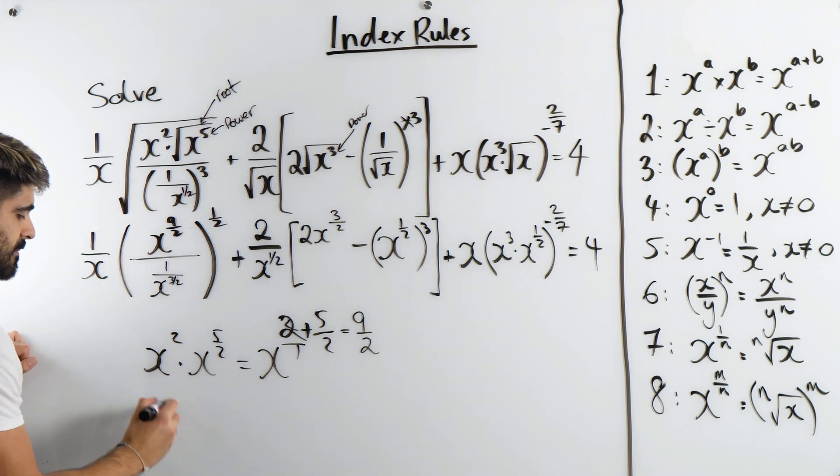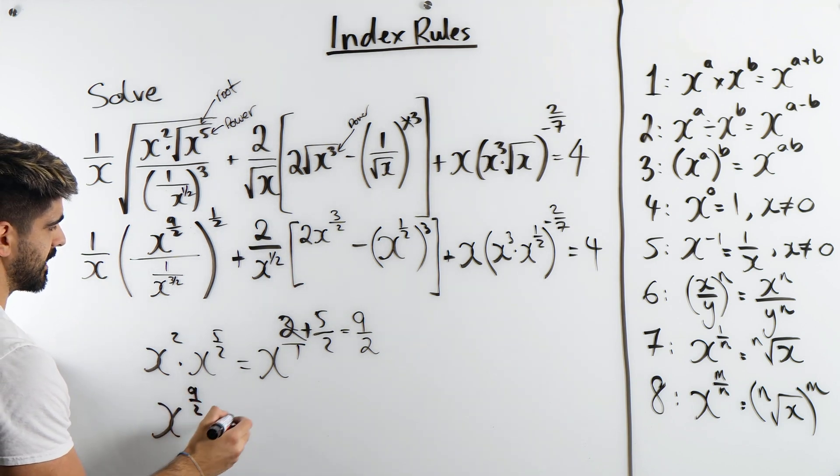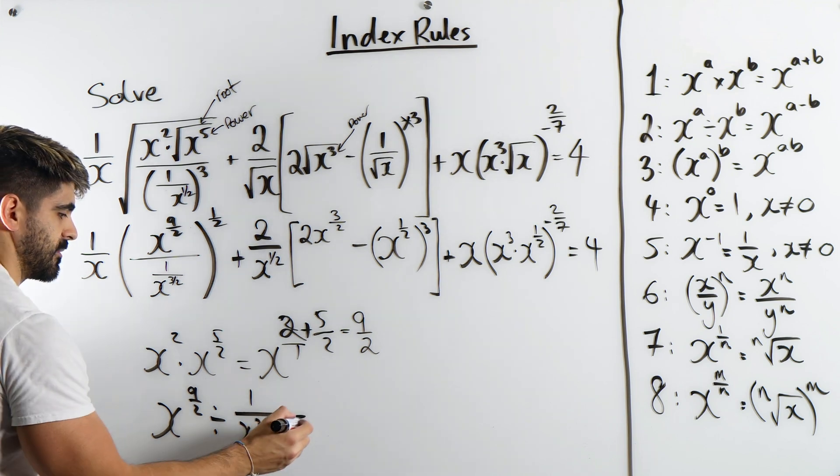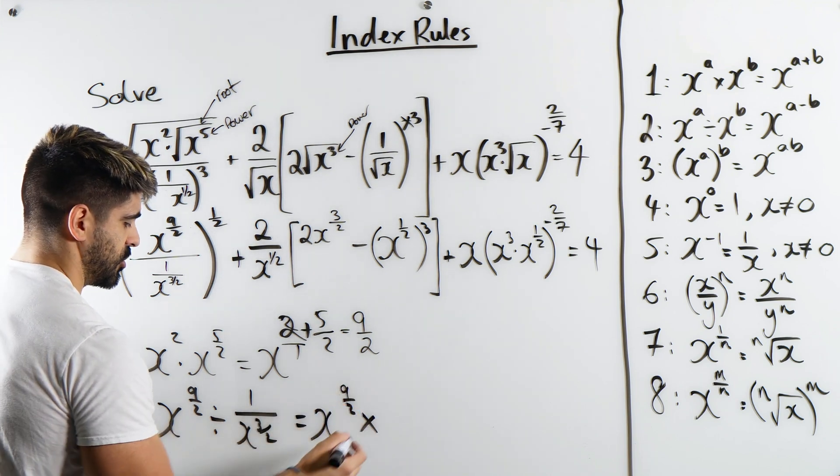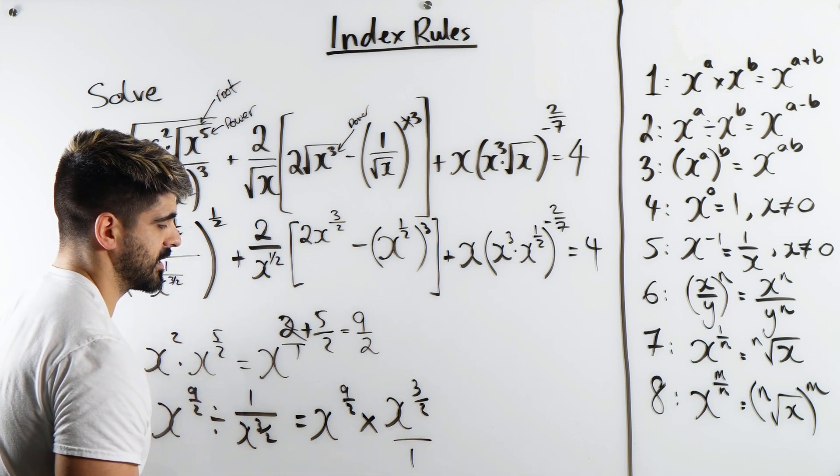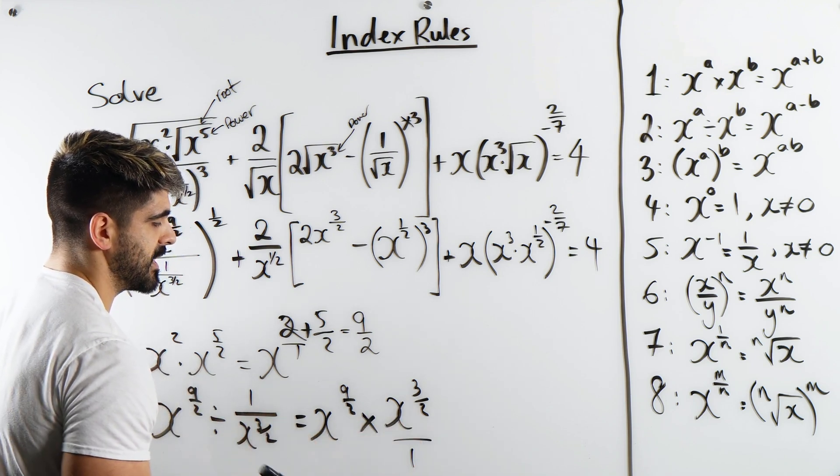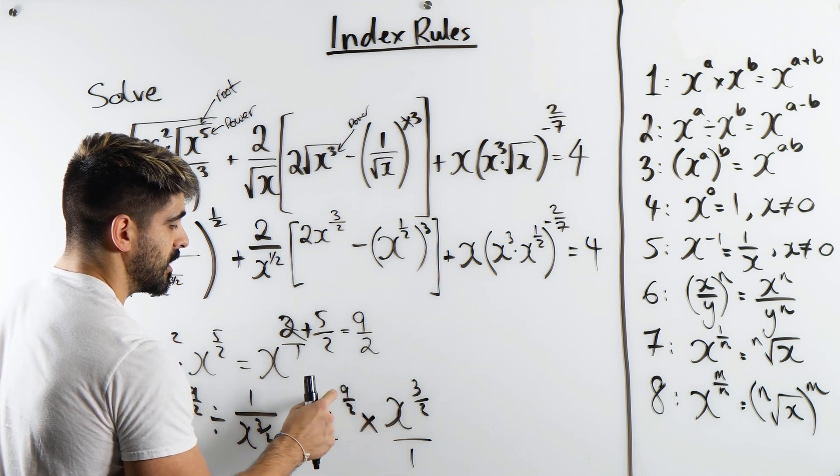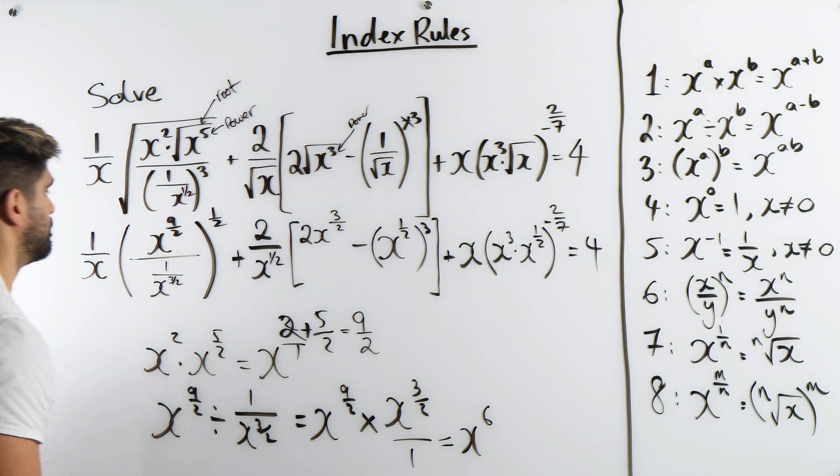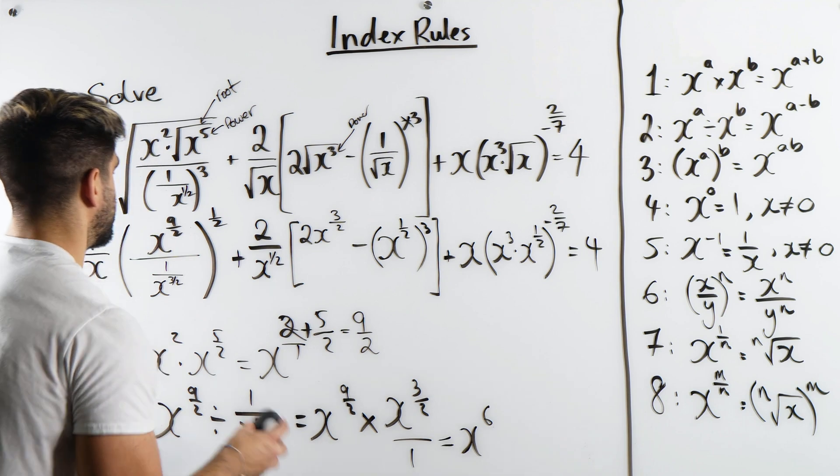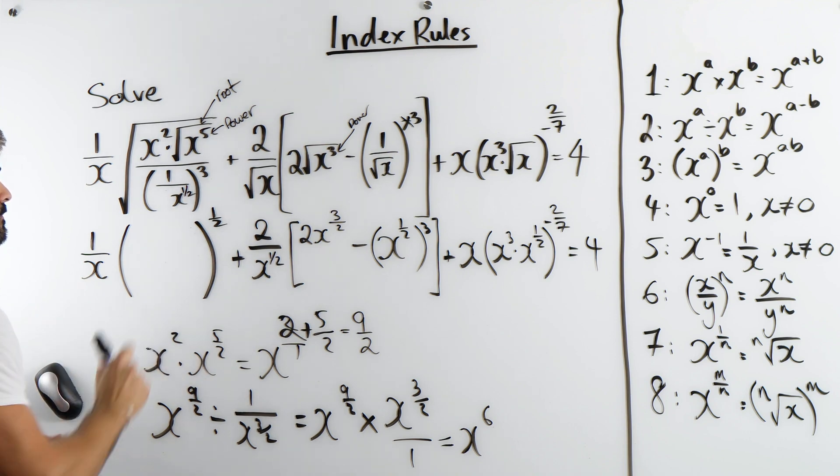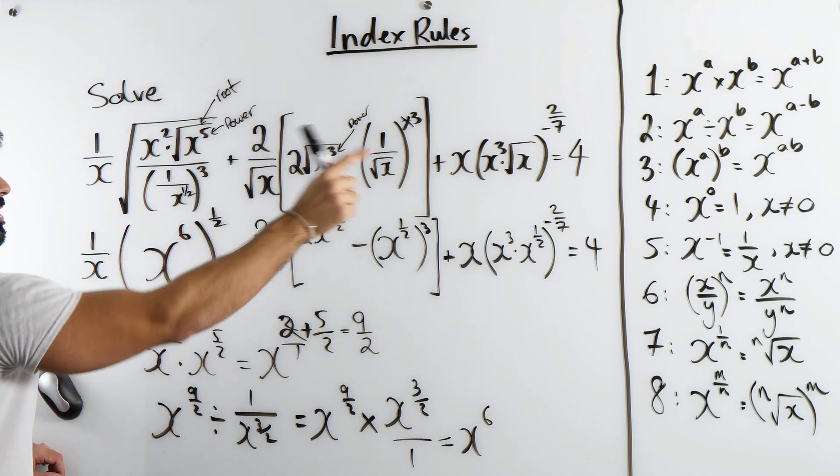Now, we're taking x to the power of 9 over 2, and we are dividing it by 1 over x to the power of 3 over 2. Here we're doing KFC, isn't it? So we're going to keep, change, and then we're going to flip this, which will be over 1, which we don't really need to write down. Then again, we're just multiplying two numbers with the same base. We're going to add the powers. 9 over 2 plus 3 over 2, 9 plus 3 is 12, over 2 is 6. Beautiful. So what's inside this bracket here is x to the power of 6. So we have x to the power of 6. It's looking good. We'll deal with that in a second.